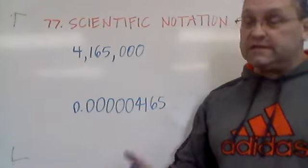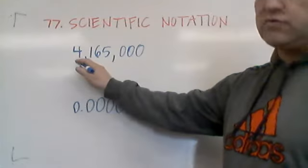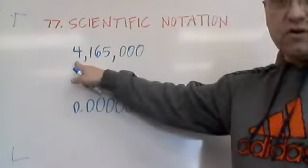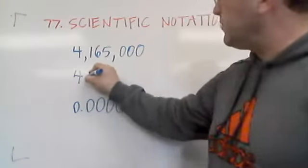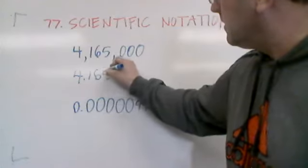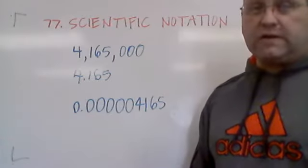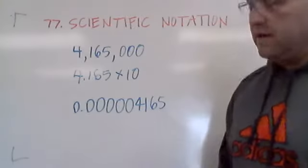Generally scientific notation will have one integer in the front. So we're going to use the first integer, 4, and express the rest of the number as a decimal. And then we're going to multiply it by a factor of 10.